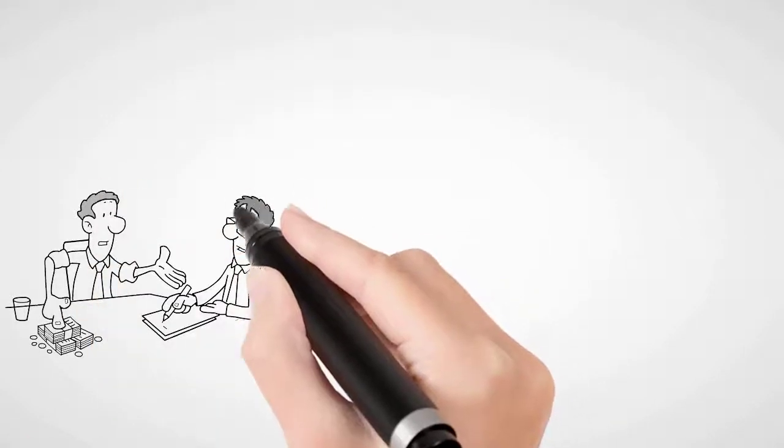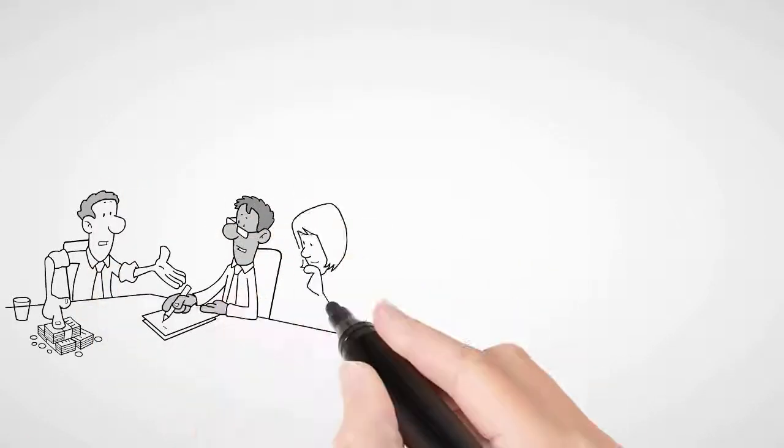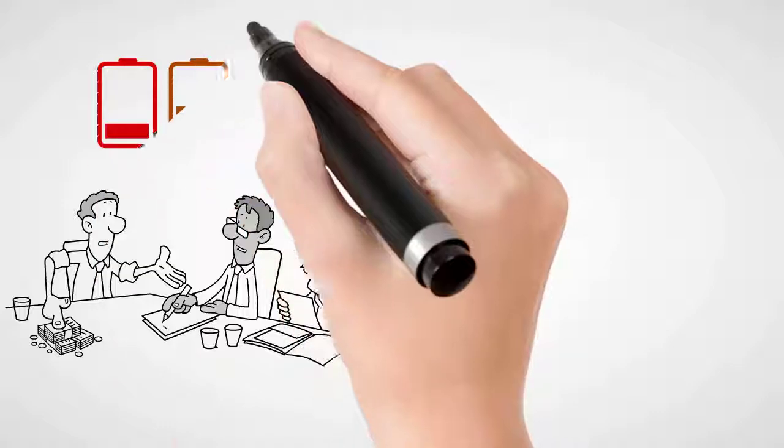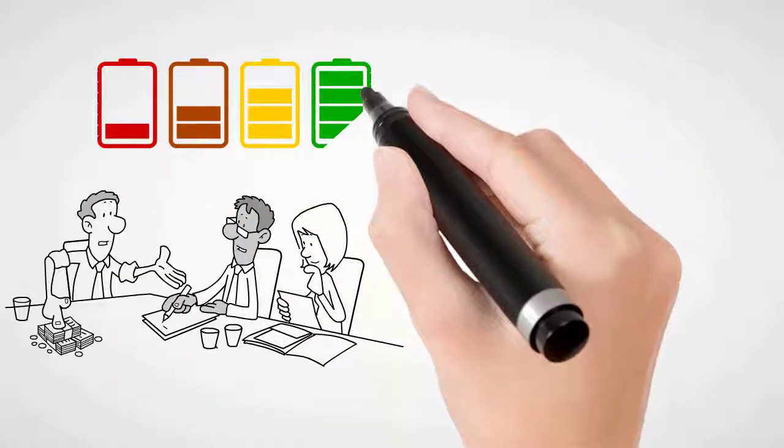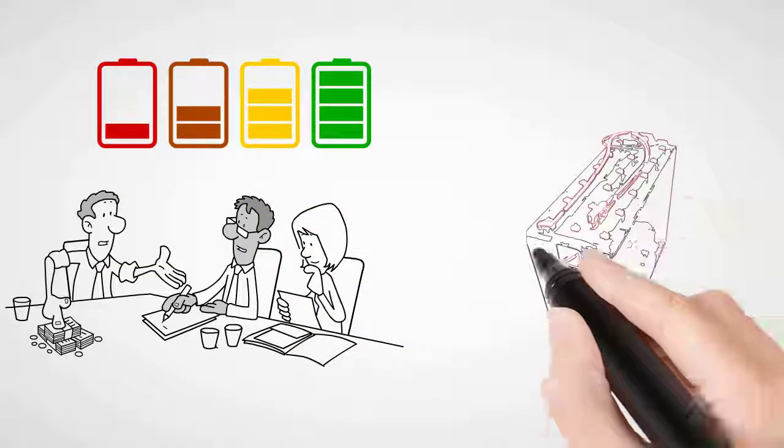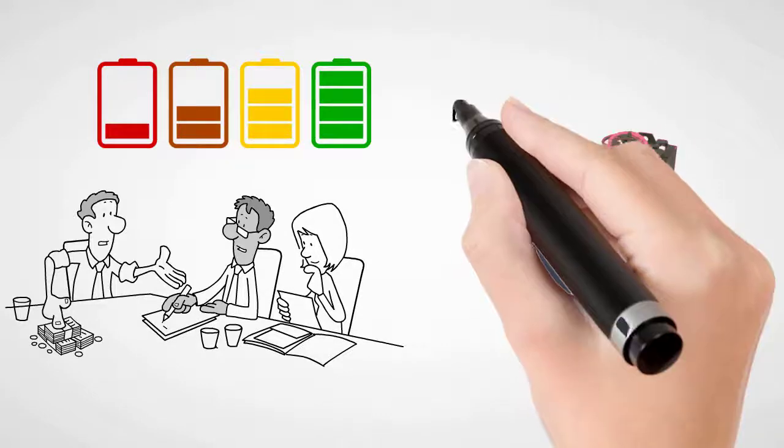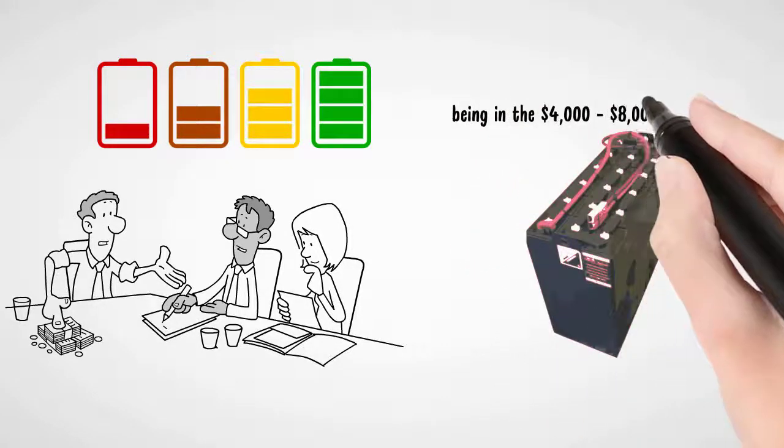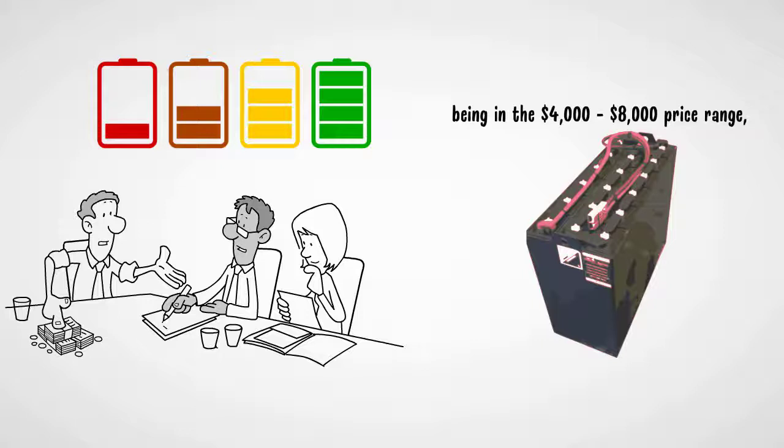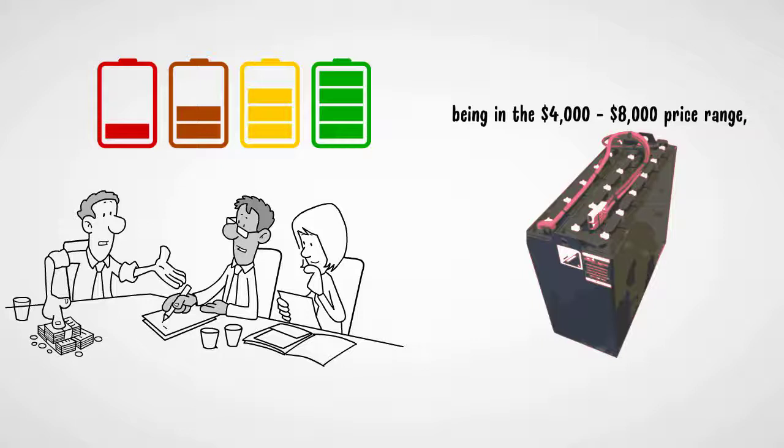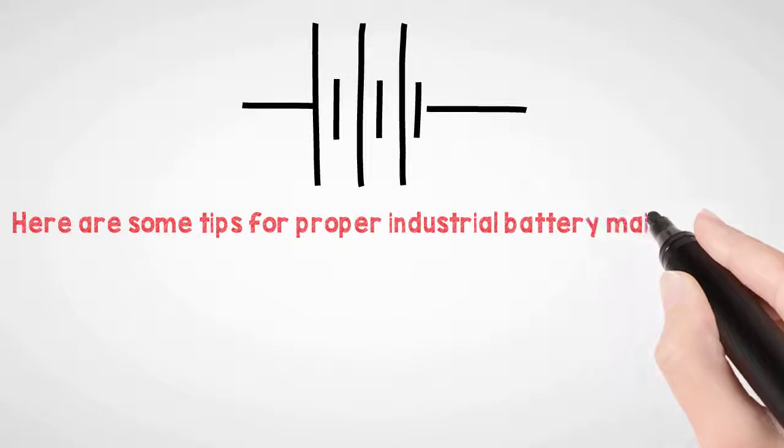Luckily for you, this trend can be reversed and with a few simple habits you can greatly increase the safety and useful life of your industrial batteries. With the average cost of an industrial battery today being in the $4,000 price range, extending your battery's life can put money on your bottom line. Here are some tips for proper industrial battery maintenance.